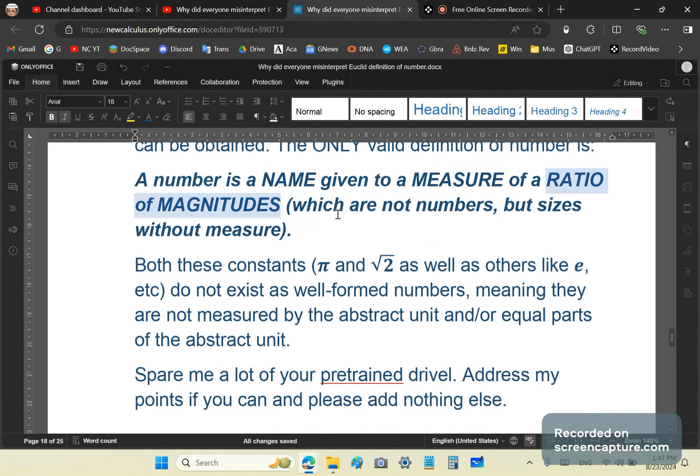And the only valid definition of number is: a number is a name given to a measure of a ratio of magnitudes. And, of course, magnitudes are not numbers. They're just sizes without measure. They can be lengths, areas, whatever.